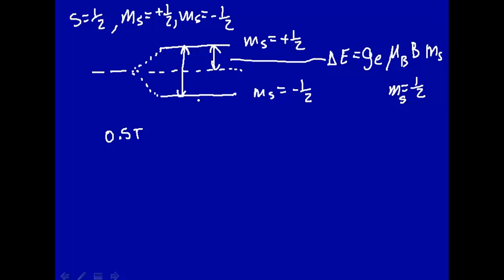So the energy level splitting, the total energy level splitting here, delta E will be just these three terms here, the electron g-factor times the Bohr magneton times the magnetic field B.